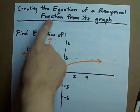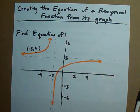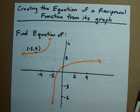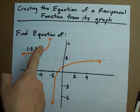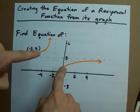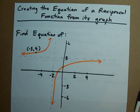How to create the equation of a reciprocal function if you're given its graph. You'll be able to identify a reciprocal function because of a vertical asymptote that the function gets closer and closer to without touching and a horizontal asymptote that the function gets closer and closer to without touching.